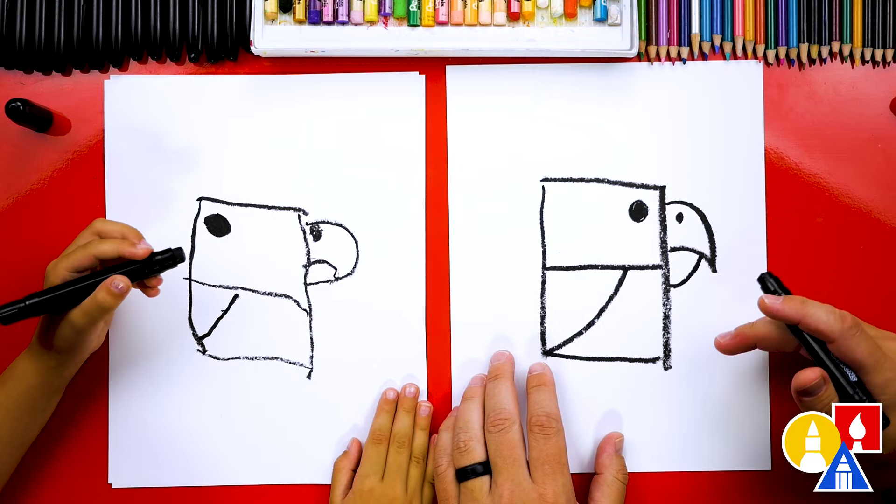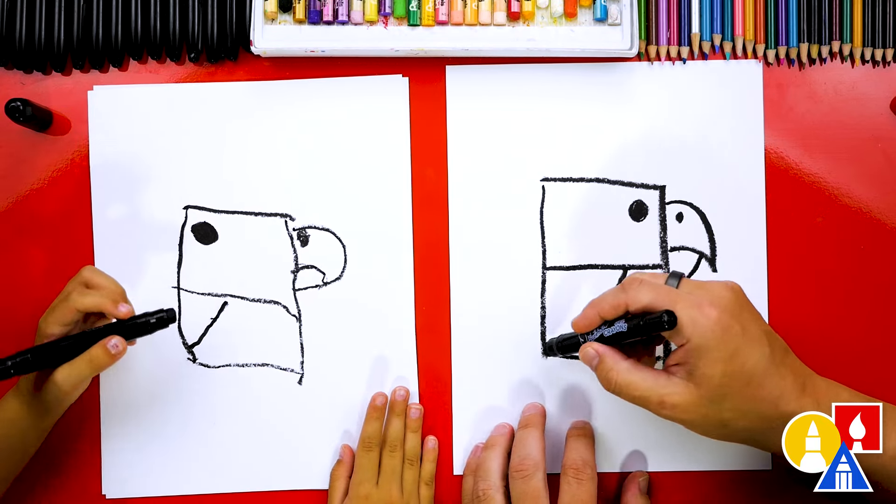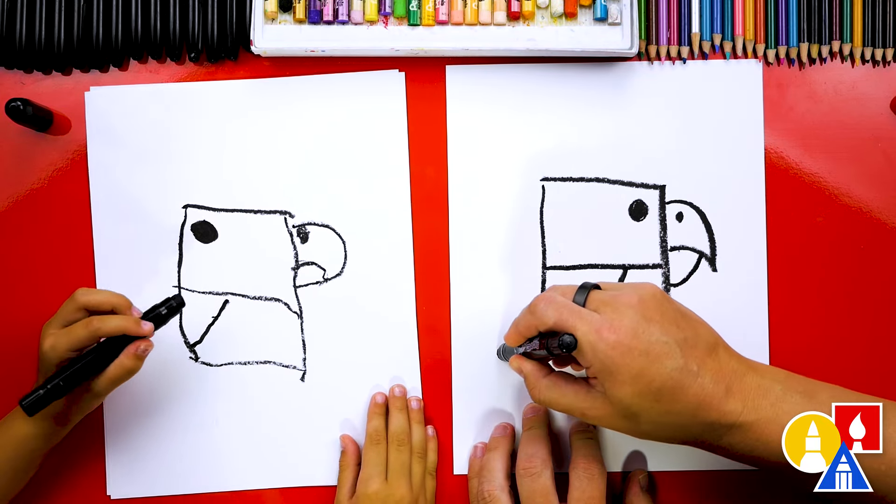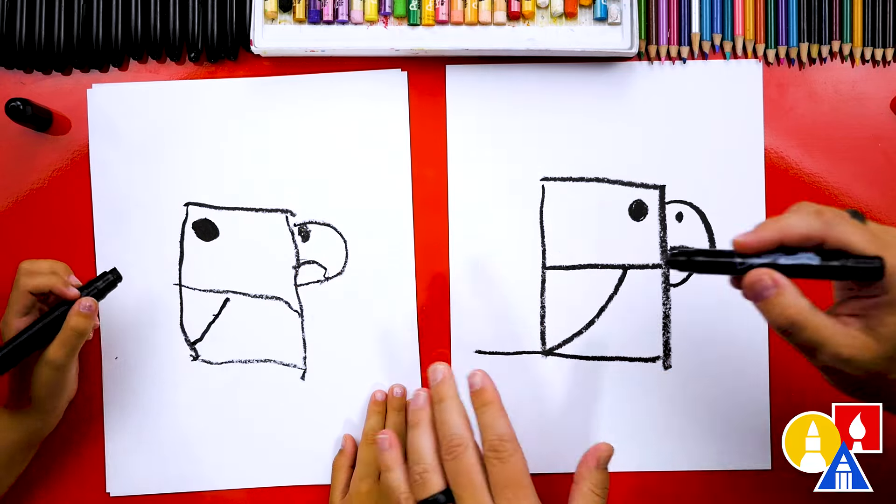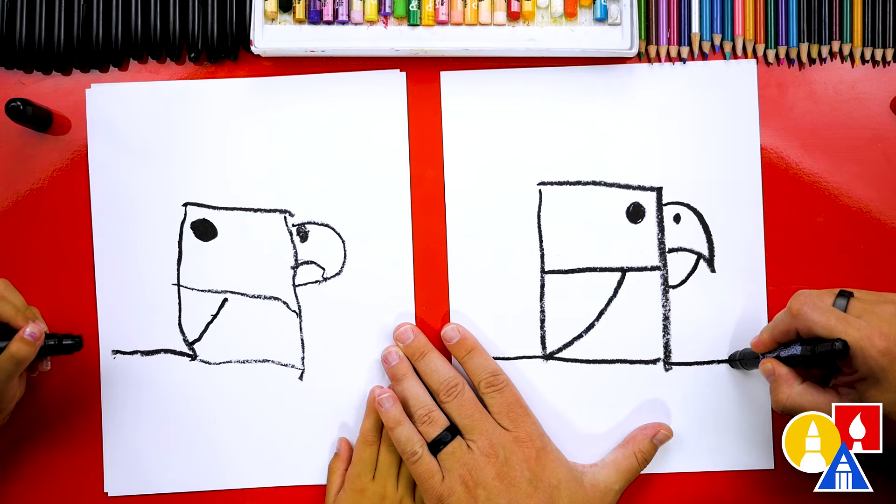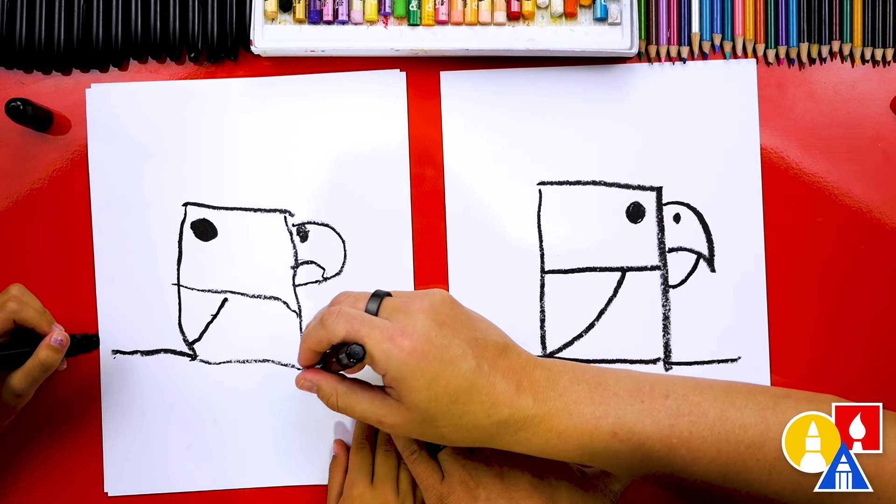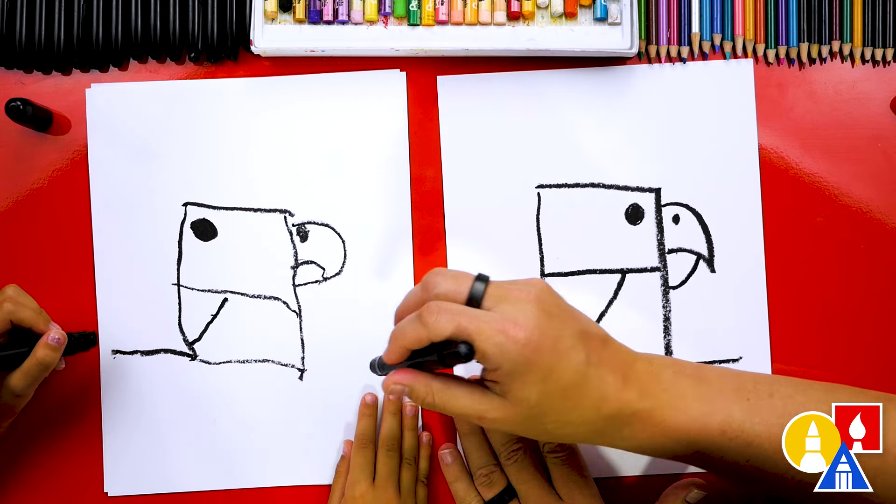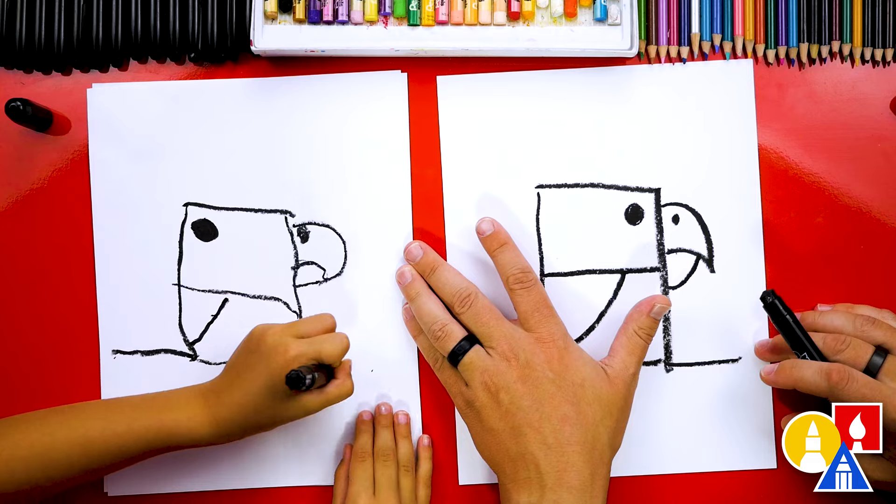What do eagles usually sit on? Branches. Yeah, in a tree. We're going to draw the top of the branch. Let's draw one line that starts here and comes out to there. And then let's draw another one on this side for the other side of our branch. We'll start there and out to here.